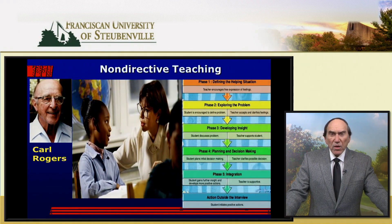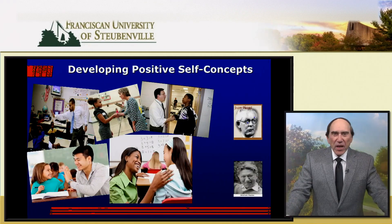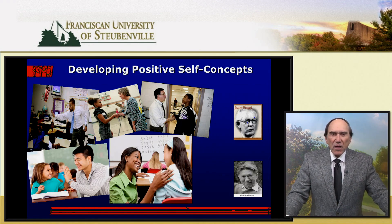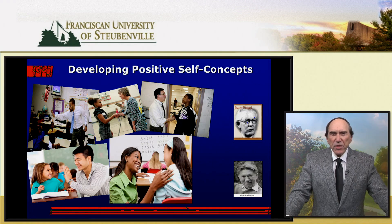In the non-directive teaching model, based on Carl Rogers' work, the student identifies the problem and sees the teacher for help. The student and teacher explore the problem together, with the student discussing it and the teacher offering support. The student plans decisions and develops actions to address the problem. By developing positive self-concepts, researched by Piaget and Maslow, the teacher boosts the student's confidence and provides opportunities for students to express their ideas and listen to others' opinions.